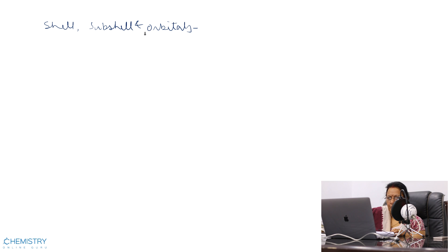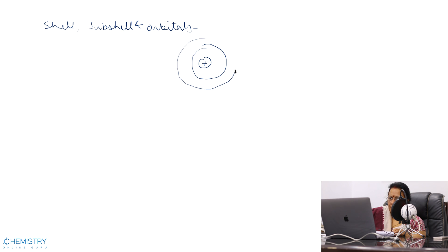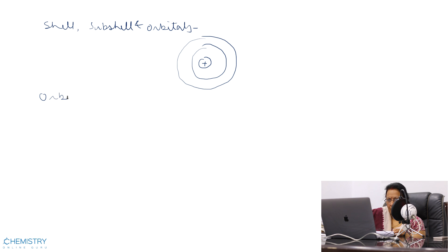An atom is made up of two parts: a positively charged nucleus and the three-dimensional space around the nucleus where electrons are present. Orbitals, subshells and shells are present in this outer region.